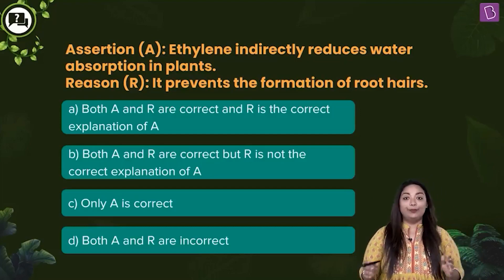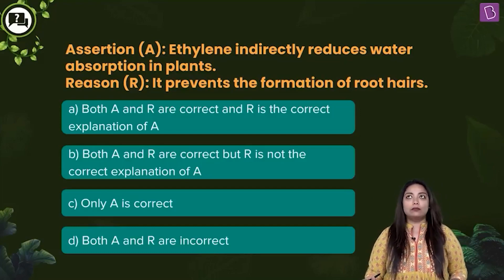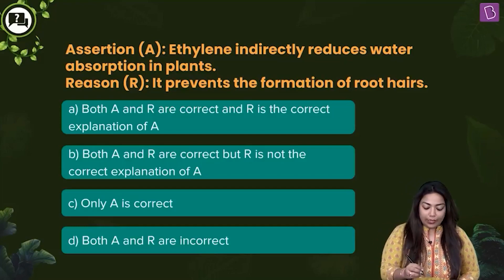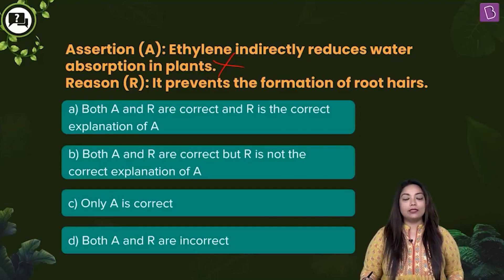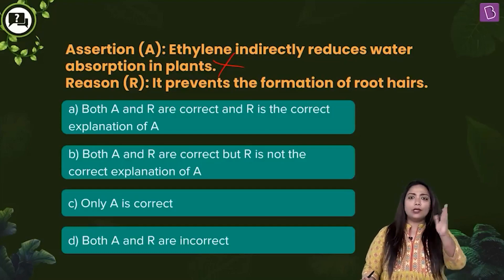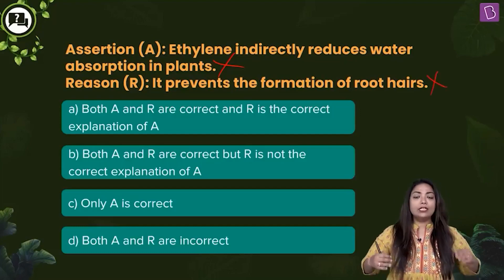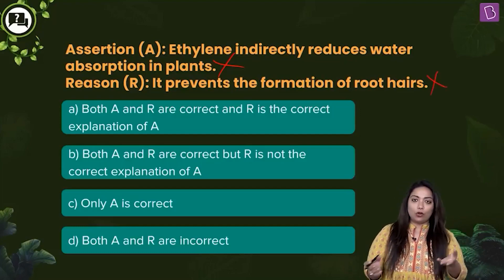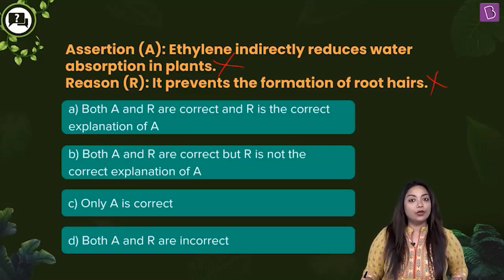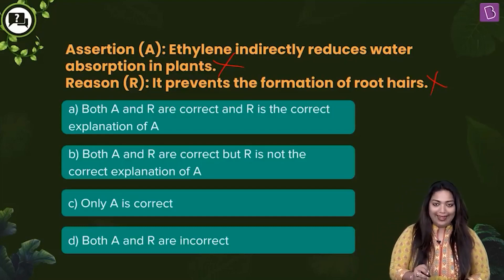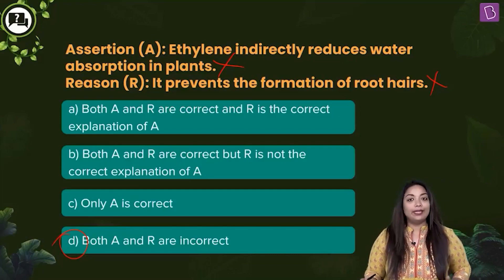Assertion: Ethylene indirectly reduces water absorption in plants. No, it does not. Reason: it prevents the formation of root hair. No, it does not — in fact, it promotes root hair formation. So this automatically saves your time from thinking whether the reason is the correct explanation or not. Both A and R are incorrect. The answer is option D.